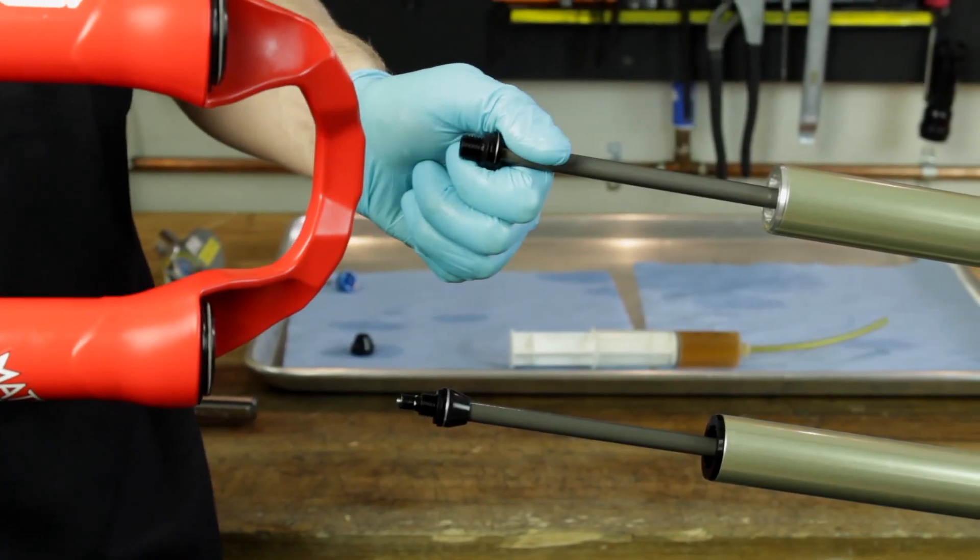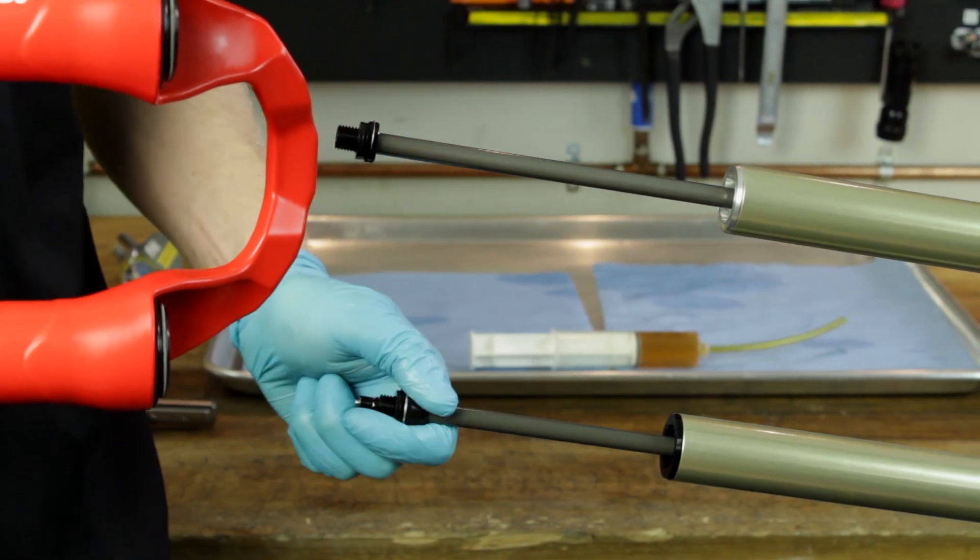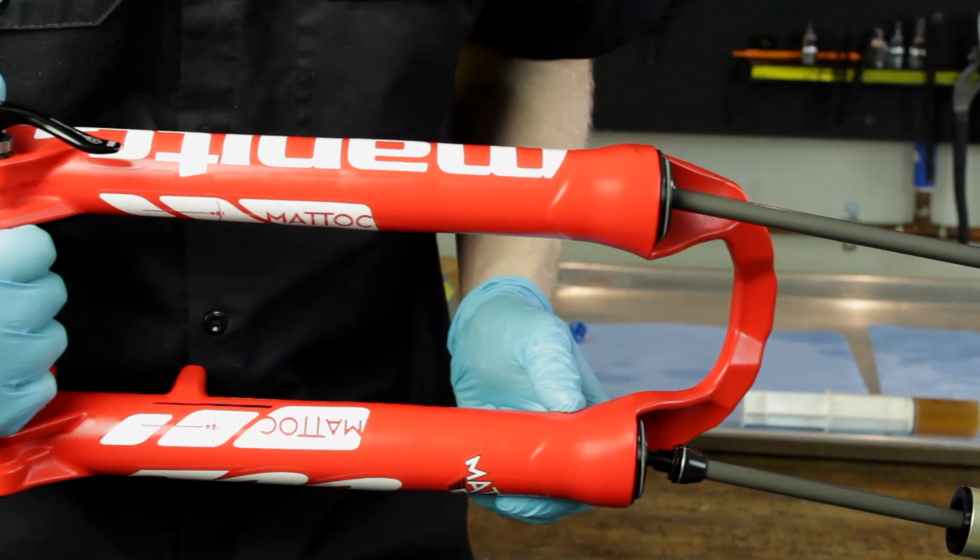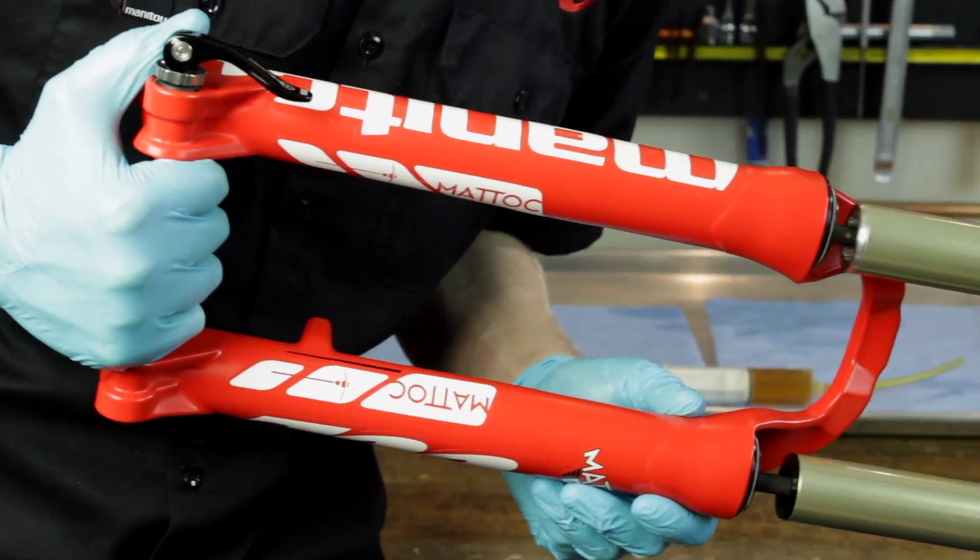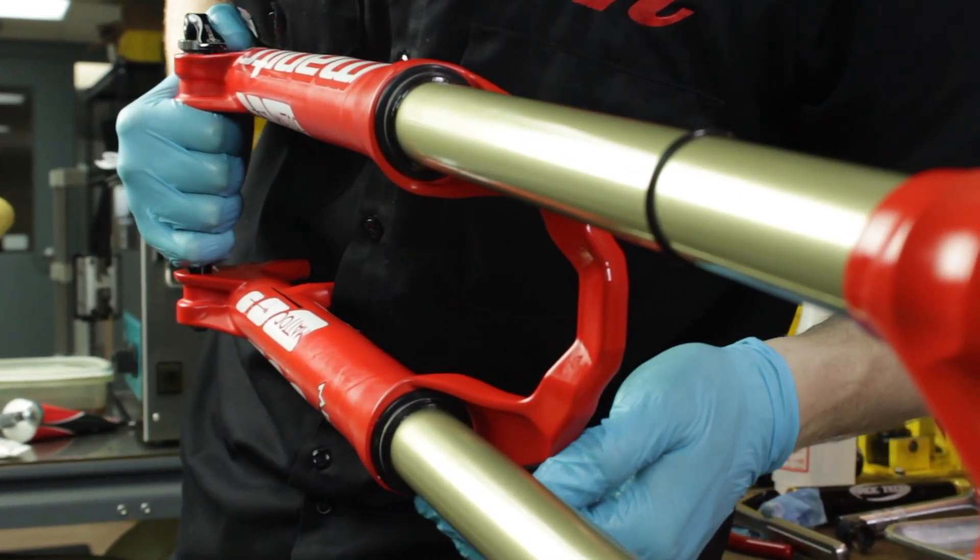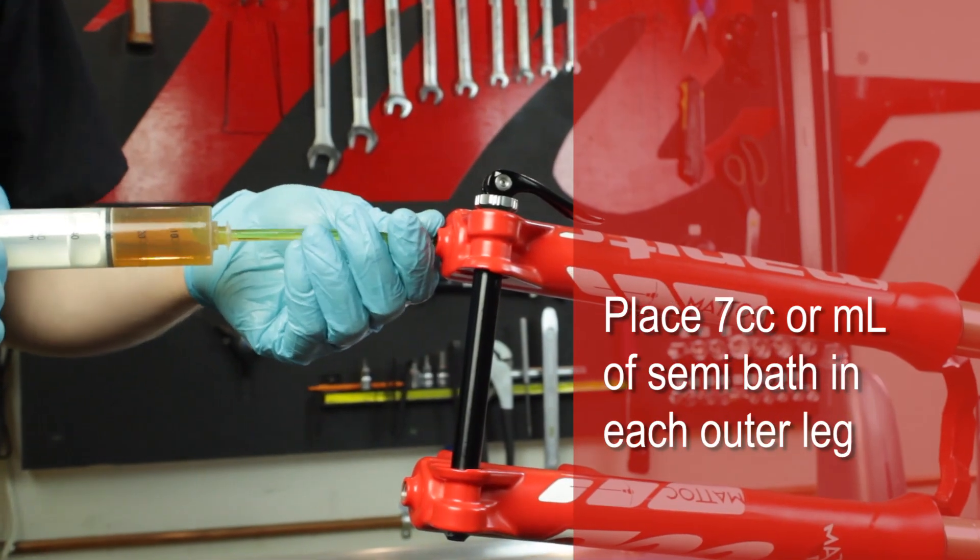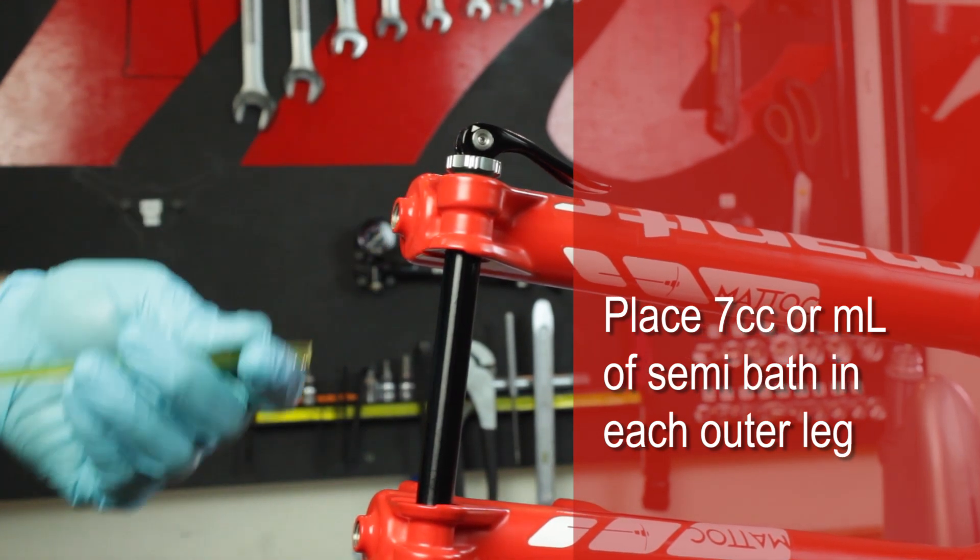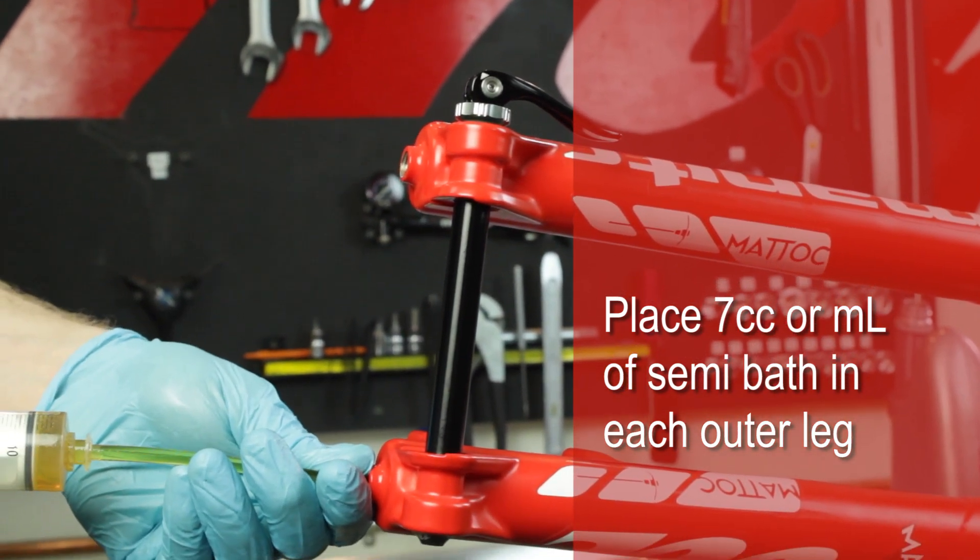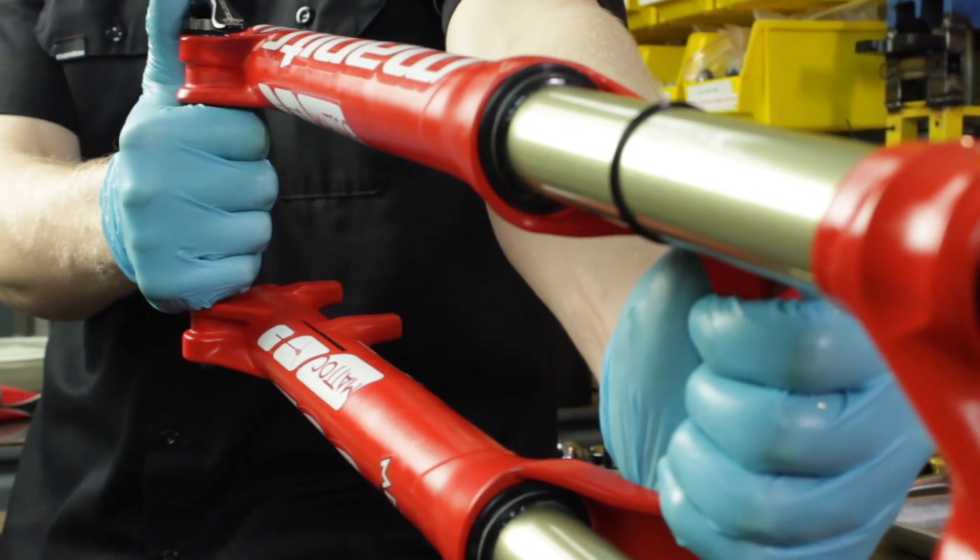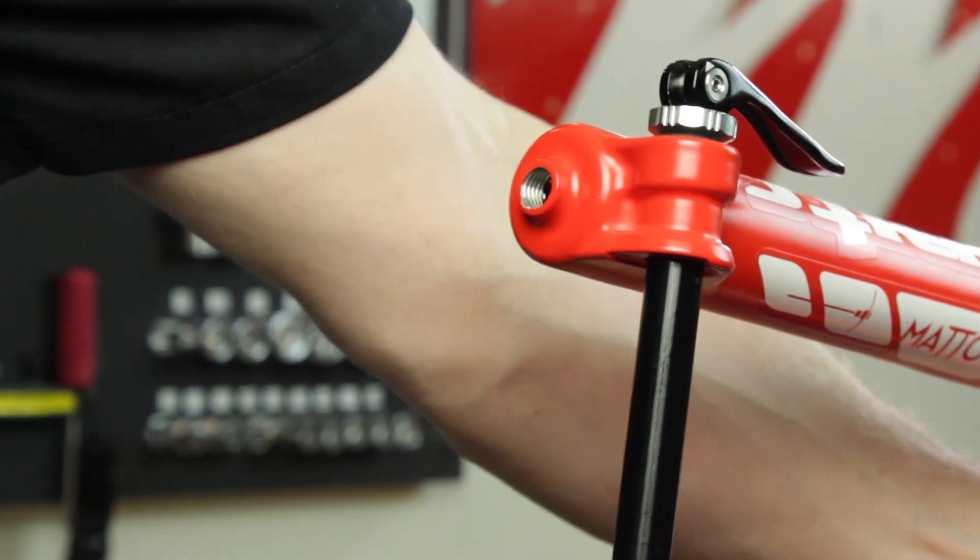Place the inner legs at a slightly upward angle. Fully extend the TPC rebound rod. Slide the inner legs into the outer casting about halfway, making sure not to fold over the dust and oil seals. Slide the outer casting down until it makes contact with the rebound and compression rod adapters.